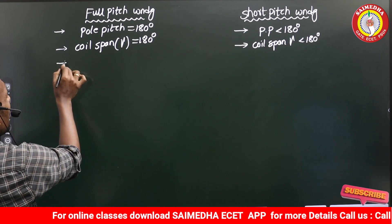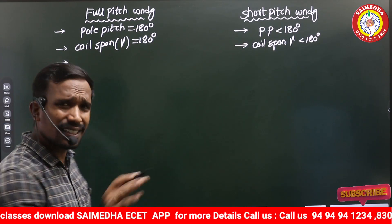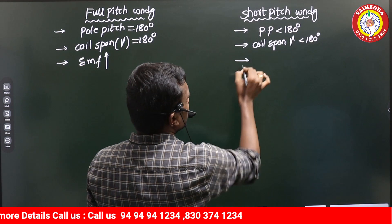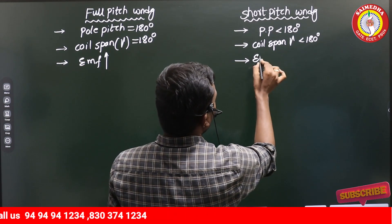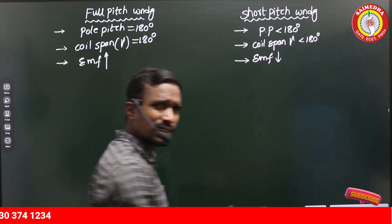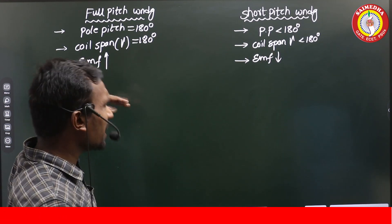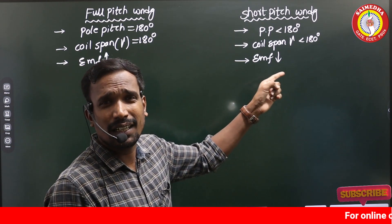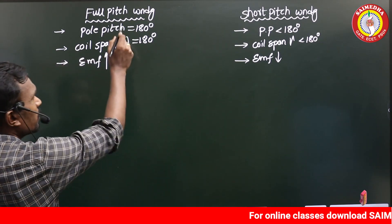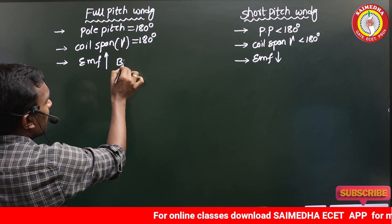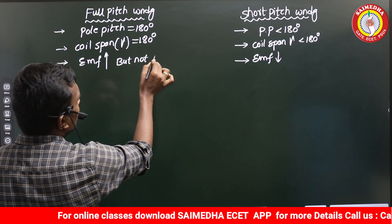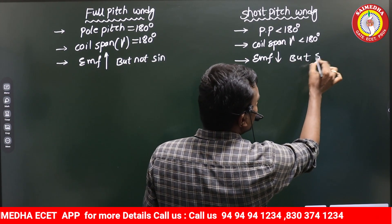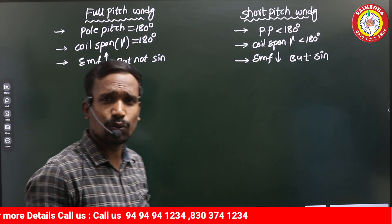In full pitch winding we have a larger coil span, so EMF is more. In short pitch winding the coil span length is reduced, so the EMF induced is less. So in full pitch winding EMF is more; in short pitch winding EMF is less. Even though we use short pitch winding, why? Because in full pitch winding the EMF is more but not sinusoidal, while in short pitch winding the EMF is less but sinusoidal.